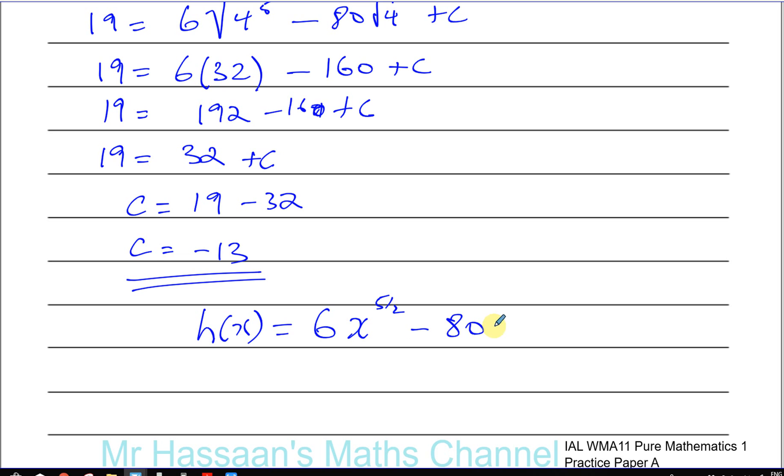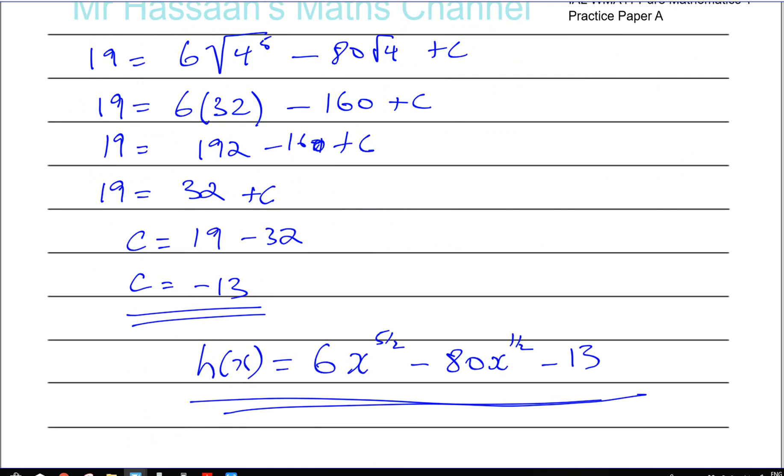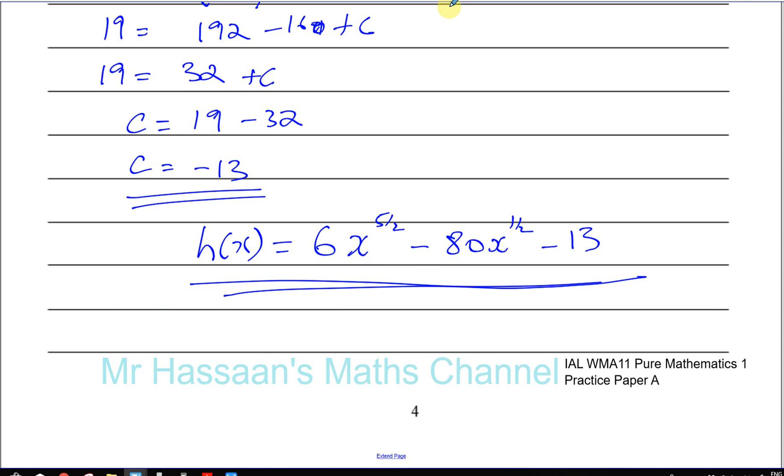And there's our final answer for this part of the question. 6x to the power of 5 over 2 minus 80x to the power of a half minus 13. That's the end of this question. Thank you for watching.